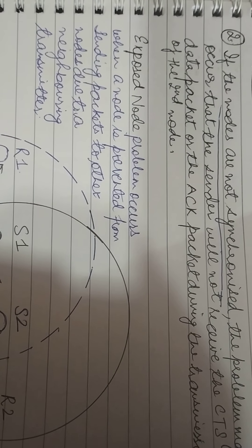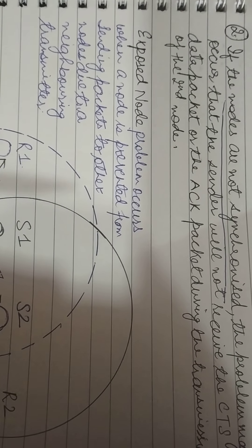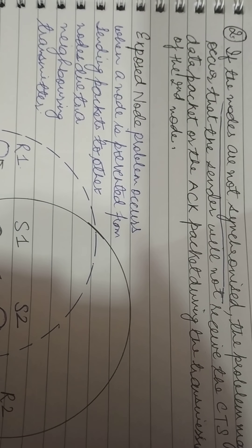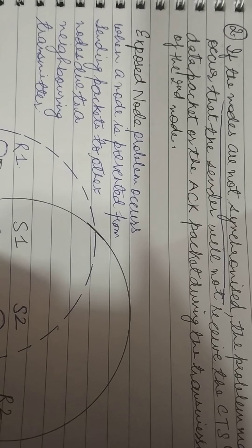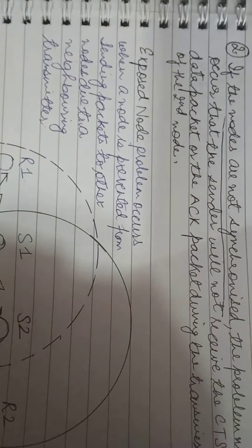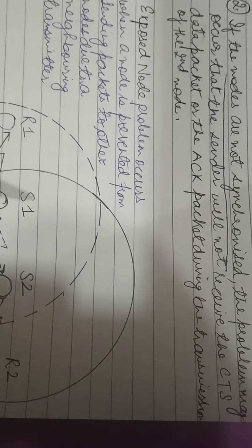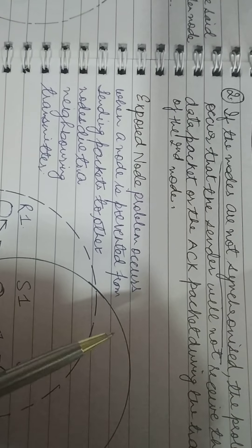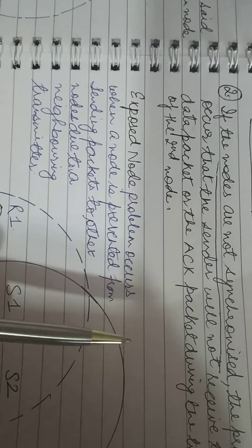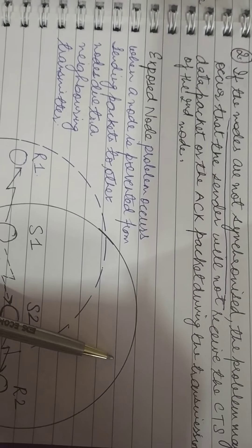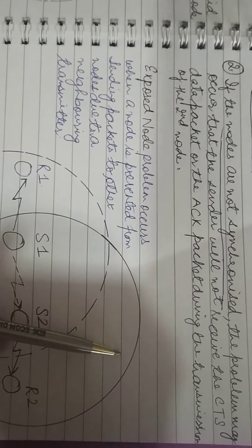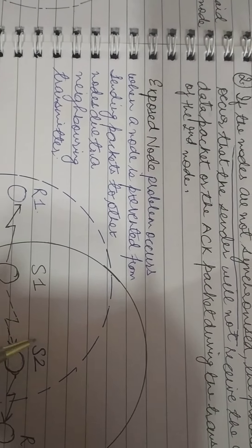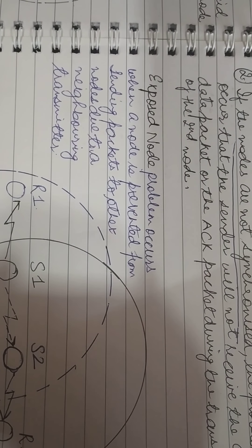In a wireless network, the exposed node problem occurs when a node is prevented from sending packets to other nodes due to a neighboring transmitter.